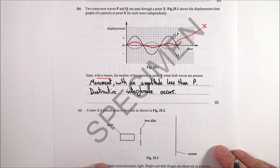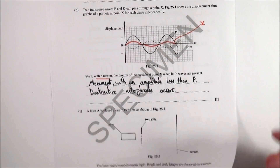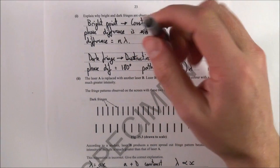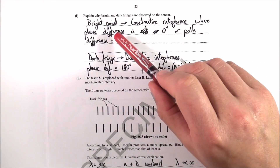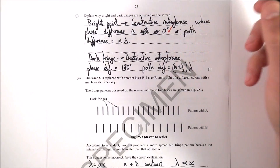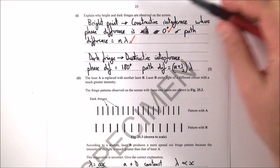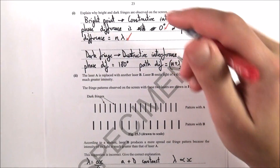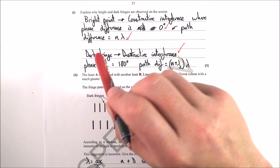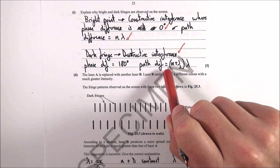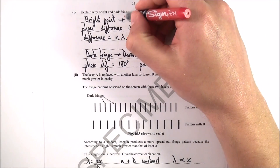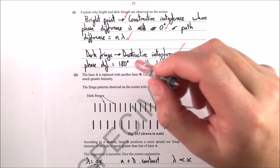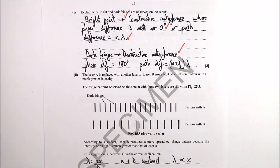The next part involves a laser and two-slit interference. You get bright and dark fringes on the screen: bright points occur where there is constructive interference, where the phase difference between the two waves is zero, or the path difference equals a multiple of the wavelength λ. Dark fringes occur where there is destructive interference — a phase difference of 180° or a path difference of (n + ½)λ. One mark for mentioning constructive and destructive interference, and one mark for specifying the phase differences.